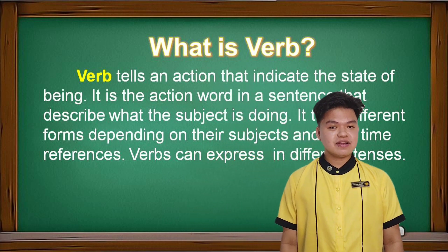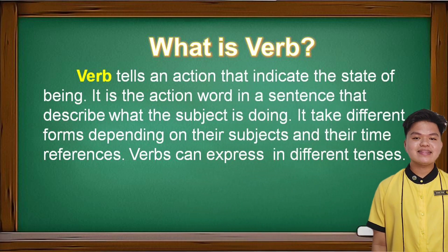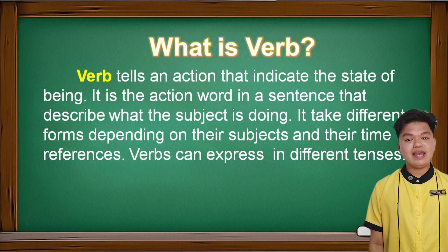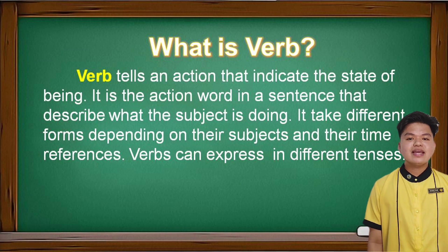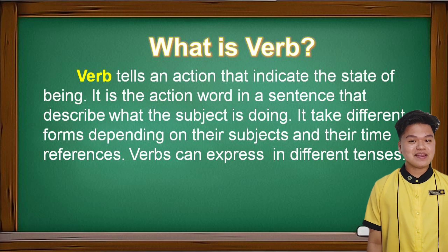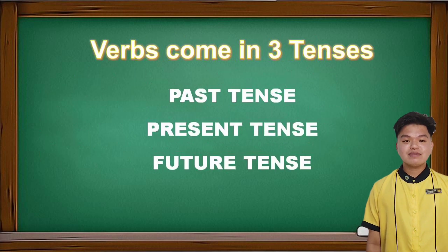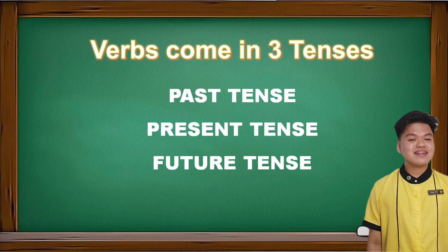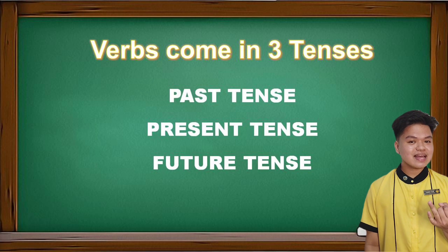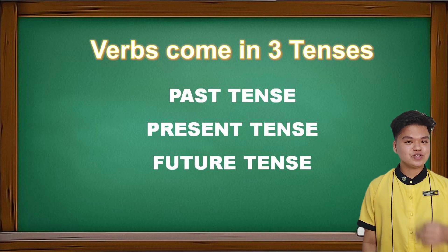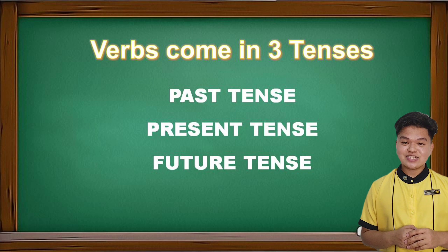Let us first find out what a verb is. A verb tells an action that indicates the state of being. It is the action word in a sentence that describes what the subject is doing. It takes different forms depending on their subjects and their time references. Verbs can express in different tenses: the past tense, present tense, and future tense.